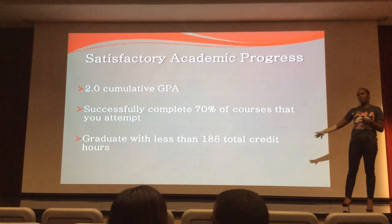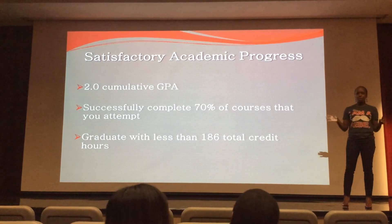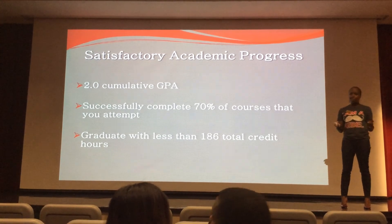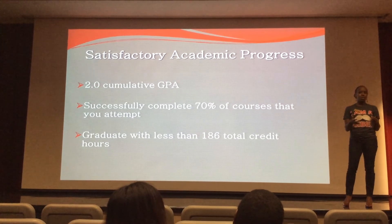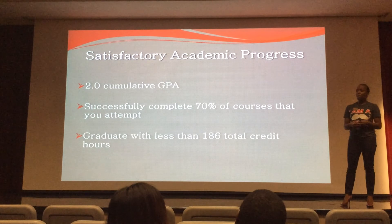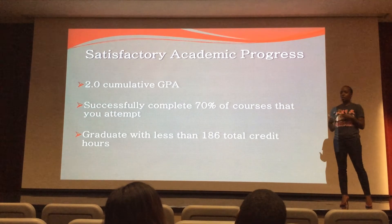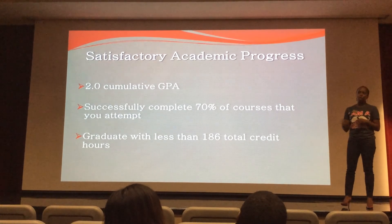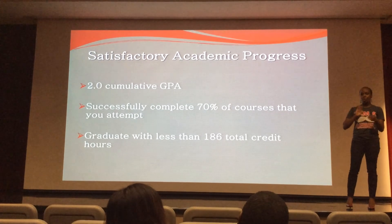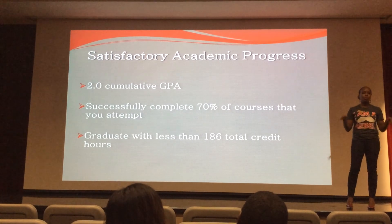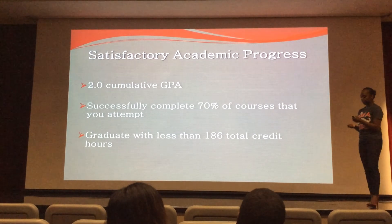If your student gets into a position where they're not meeting one or more of these standards, all hope is not lost. There is an appeal process — they'll write a letter explaining what led them to that position, which will go to a committee. The committee will make a decision based on that letter and any supporting documentation on whether to extend aid. If your student calls you frantic, redirect them to our office and we will help them get the appeal documents they need.